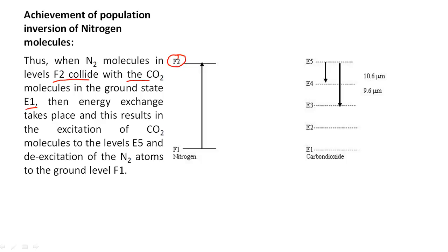When the excited nitrogen collides with the carbon dioxide molecules in the ground state E1, energy exchange takes place and this results in the excitation of carbon dioxide molecules to the level E5 and de-excitation of nitrogen atoms to the ground level F1.